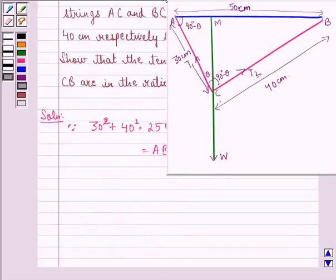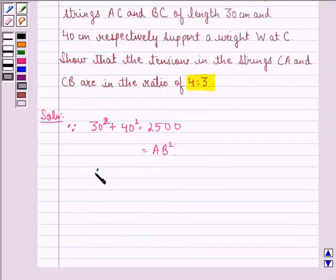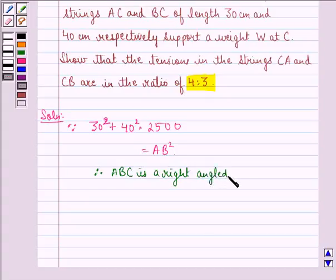is equal to 2500 that is same as AB squared. It means that ABC is a right angled triangle at the point C.